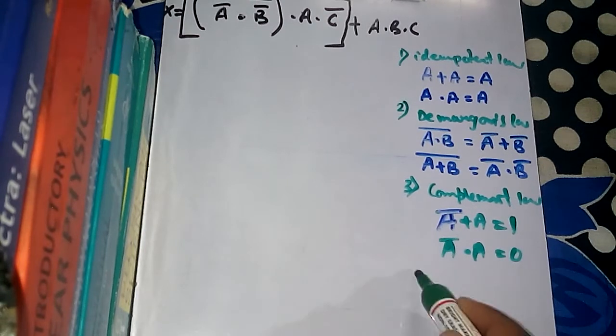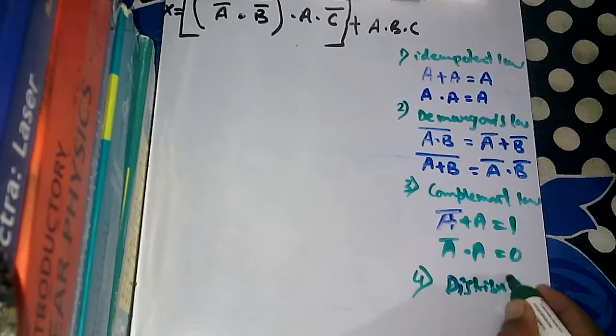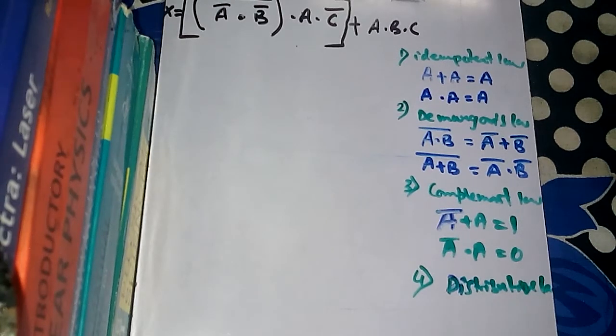The fourth law is the Distributive law: A·(B + C) = A·B + A·C, and A + B·C = (A + B)·(A + C). The fifth is the Double Negation law: A double-bar is always equal to A.